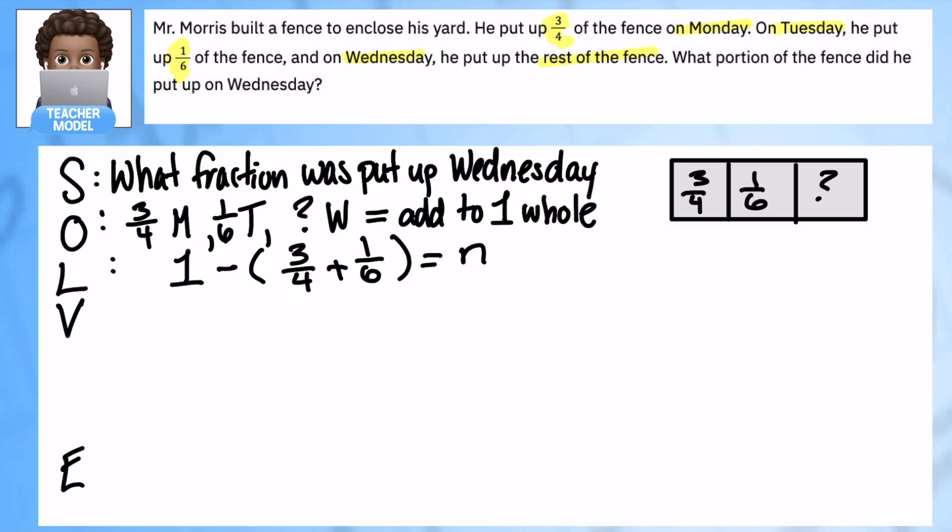Let's start by adding those two fractions with unlike denominators, and you guys know I love to stack. I'm thinking of my multiples for four, and I'm saying them in my head, four, eight, twelve. Twelve and six match.